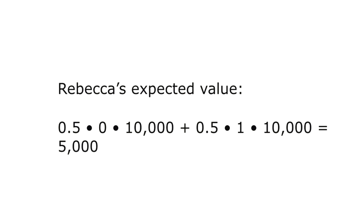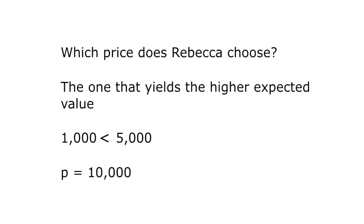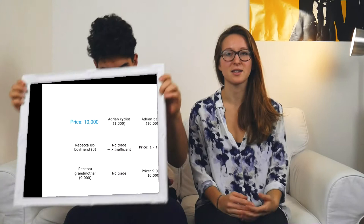What will happen if Rebecca names a price of 10,000? The banker would definitely buy the car; however, the cyclist would not be interested and would not buy. So her expected value is 0.5 × 0 (cyclist not buying) + 0.5 × 10,000 (banker buying), which results in an expected value of 5,000. Which price does Rebecca choose? The one that yields the higher expected value — which is 10,000 euros (expected value 5,000 vs. 1,000). So Rebecca who sells her ex-boyfriend's car will always name the price of 10,000. Though the three conditions hold, the allocation reached is inefficient.